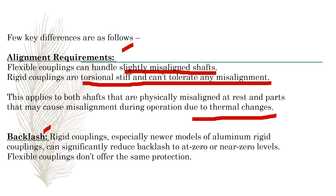What is backlash? In rigid coupling, especially newer models of aluminum rigid couplings, backlash can be significantly reduced to near-zero levels. Flexible couplings don't offer the same protection against backlash. Because there is still some misalignment in flexible couplings, the backlash reduction is less effective, whereas rigid couplings can reduce backlash to almost zero or near-zero levels.